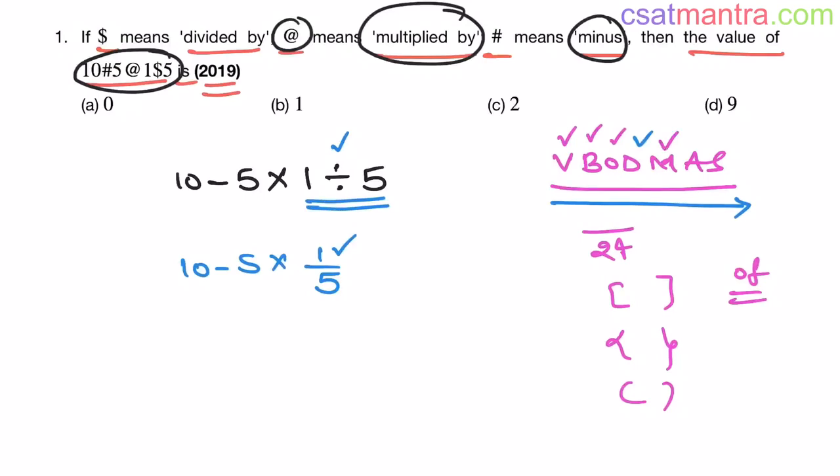Now M. M for multiplication. This one and this one. Multiplication. 5, 5 gets canceled out my friends. When you multiply 5 into 1 by 5, 5, 5 gets canceled out. So 10 minus 1. Now this is 9 my friends. So our answer is D.